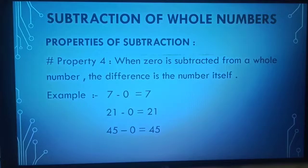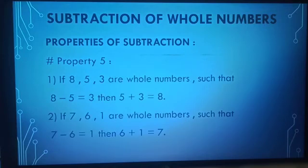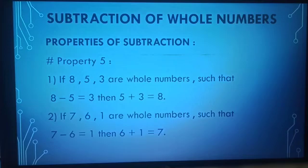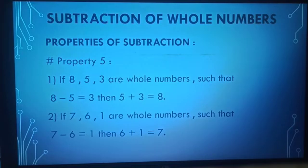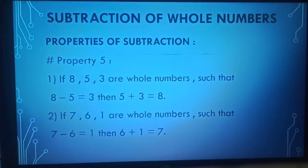Moving towards the next property: if 8, 5, and 3 are whole numbers such that 8 minus 5 is equal to 3, then 5 plus 3 is equal to 8. Let us discuss another example: if 7, 6, and 1 are whole numbers such that 7 minus 6 is equal to 1, then 6 plus 1 is equal to 7.